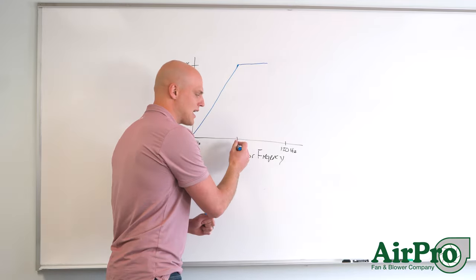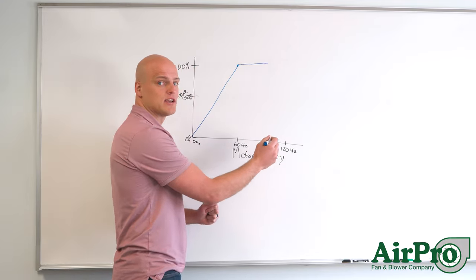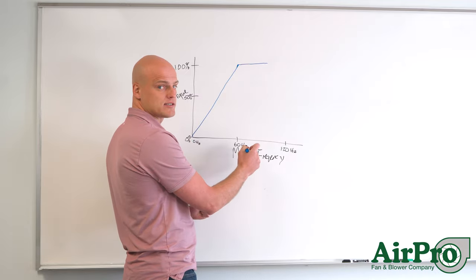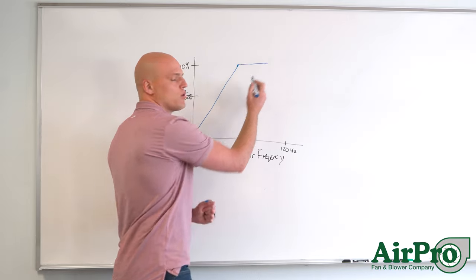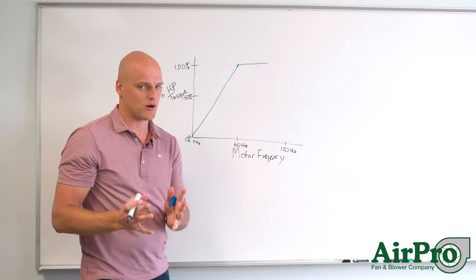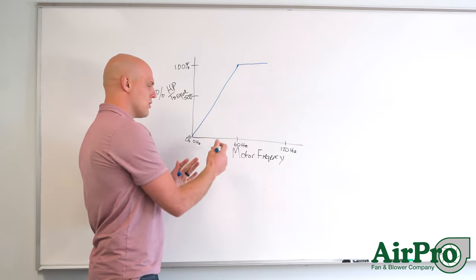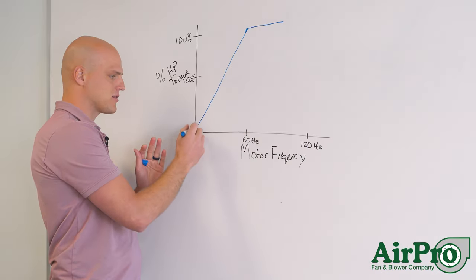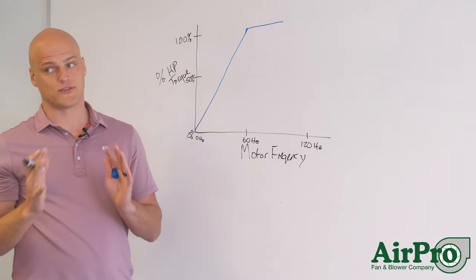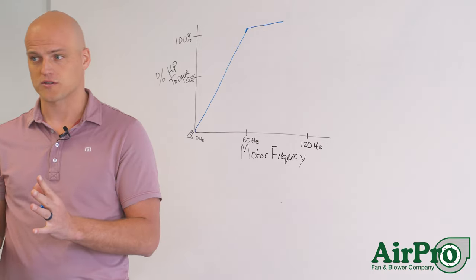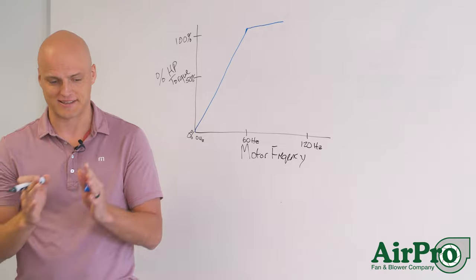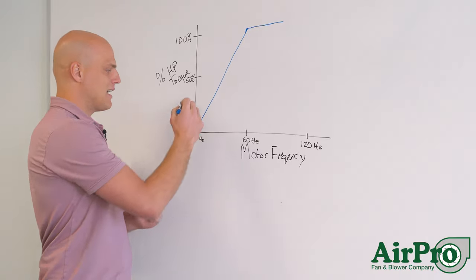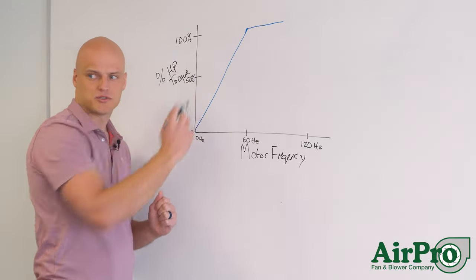As high as the motor is able to run in frequency past 60 hertz you have the full nameplate horsepower available. But notice at less than 60 hertz from 0 to 60 you don't have the full motor horsepower available that's on the nameplate. And it is proportional to your speed.